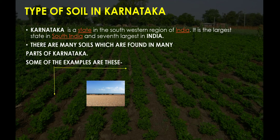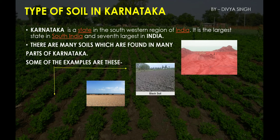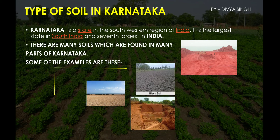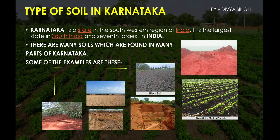Type of soil in Karnataka: Karnataka is a state in the south-western region of India and is the largest state in south India and seventh largest in India. Many types of soil are found across Karnataka, including red soil, black soil, lateritic soil, and black cotton soil, among others.